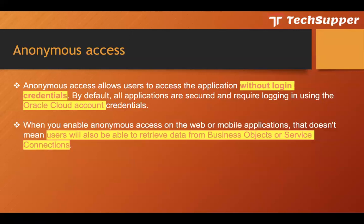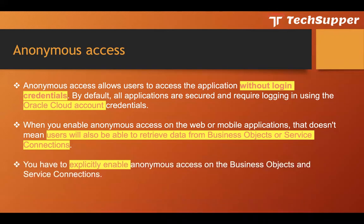Similarly for service connections — if you have a REST API configured in Visual Builder and a page showing data from that service connection, even if you enable web anonymous access, the user will be redirected to the login page. You have to explicitly enable anonymous access on each component: the web or mobile application, business objects, and service connections individually.